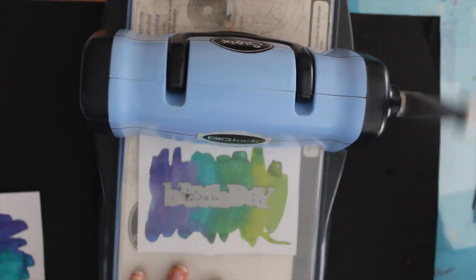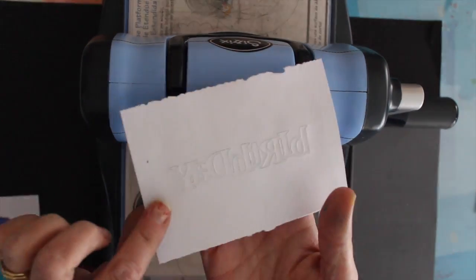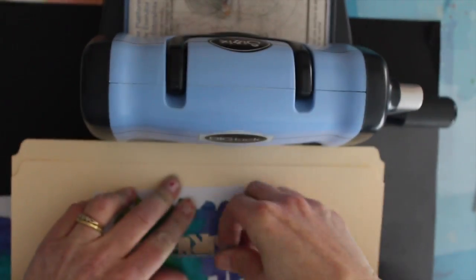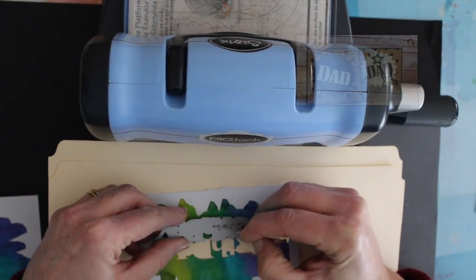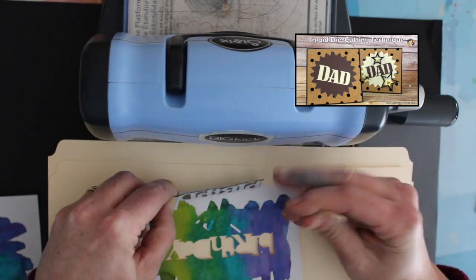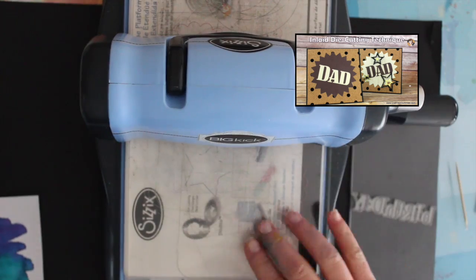So after I got done with it drying, I went ahead and die cut it using this great little birthday die and next up I'm going to be doing the inlaid die cutting technique. Again you can click the box in the corner and see the tutorial in slow motion or in regular motion so you don't have to try and keep up with it here.